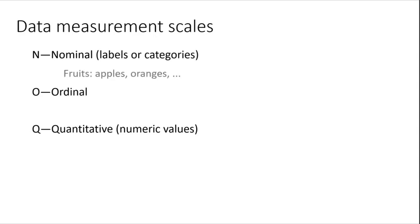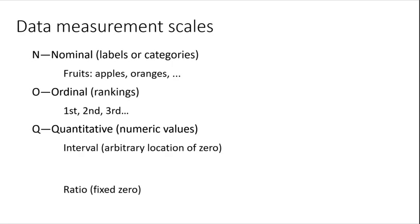Interval data has an arbitrary zero point, arbitrary because zero doesn't mean none of that thing. For example, zero latitude doesn't mean there's no latitude; it's just the origin. Zero Fahrenheit doesn't mean there's no temperature.